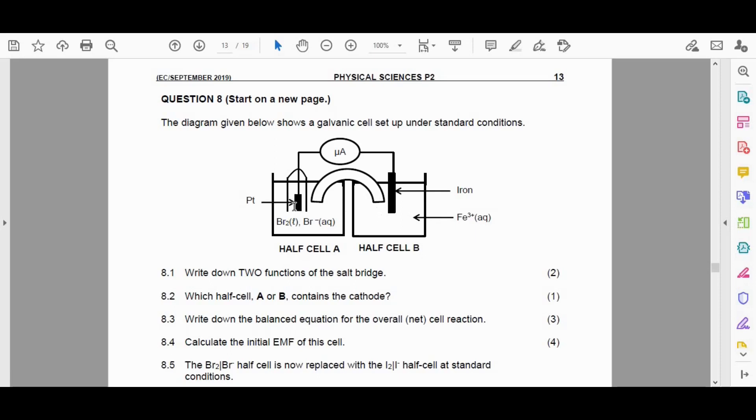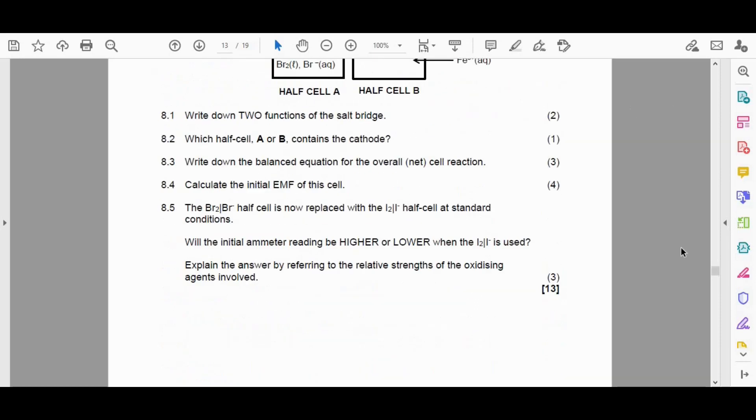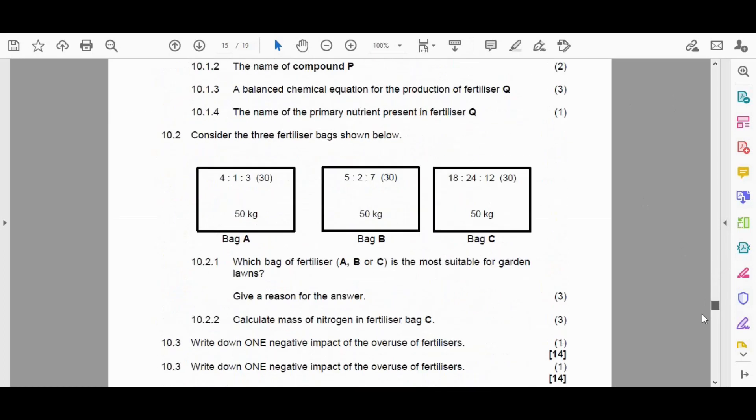So it looks like we've got a platinum electrode here, an iron electrode here. So what we're going to do, we're just going to scroll down to our table of standard reduction potentials.